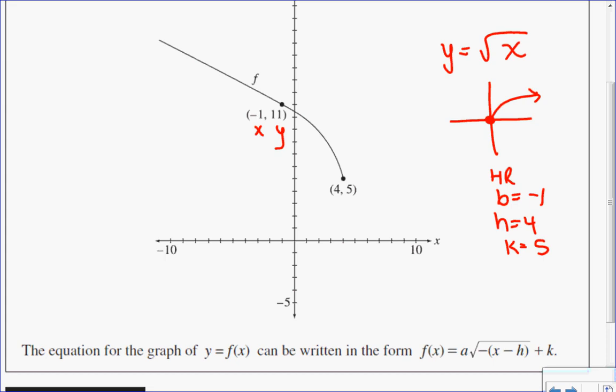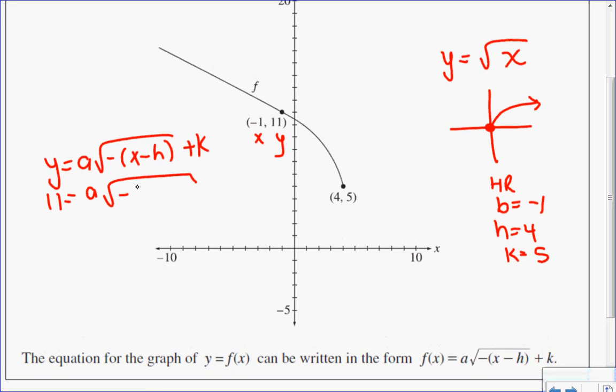f of x, which is the same as y, equals a, the root of negative x minus h plus k. And let's substitute everything in. So y is 11, x is negative 1, h is 4, and then plus k, which is 5.